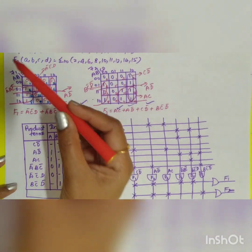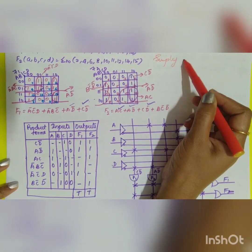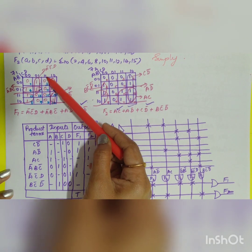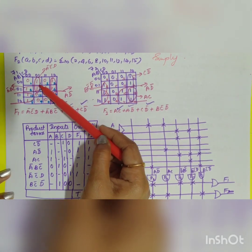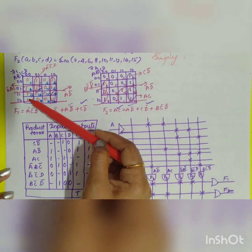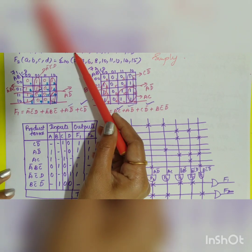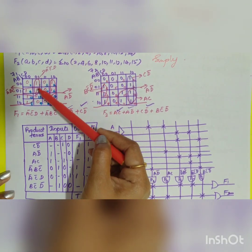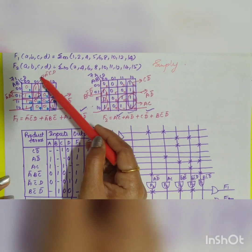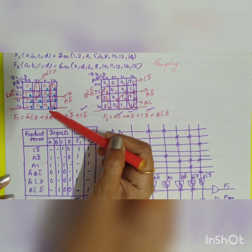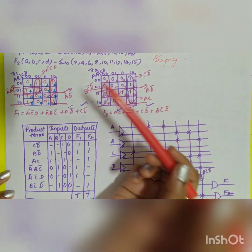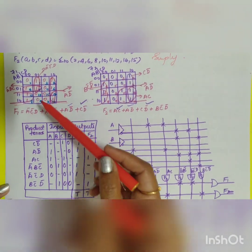We are going to simplify using K-map. For F1(a, b, c, d), the K-map is set up with minterms. Wherever you have minterms 1, 2, 4, 5, 6, 8, 10, 12, 14, the value is one. You can group these four ones together, these two ones, these two ones, and these two ones — giving four terms for F1.